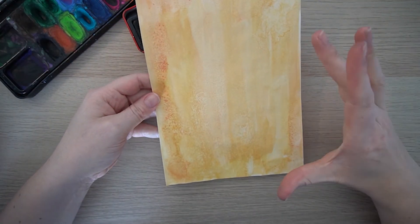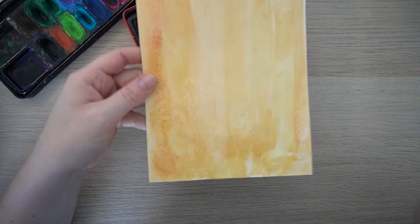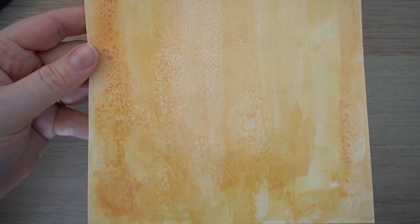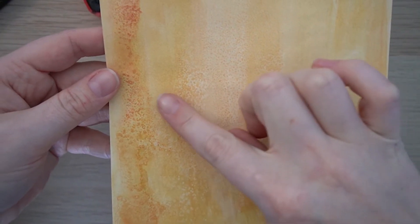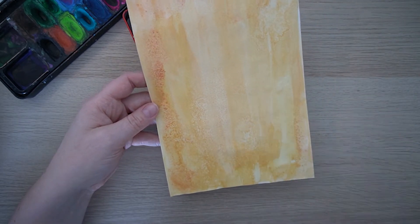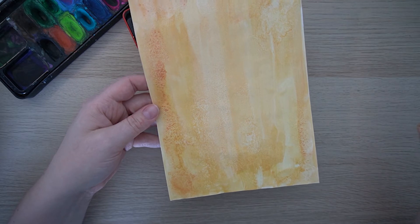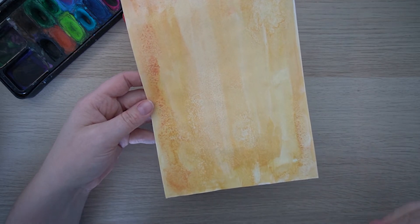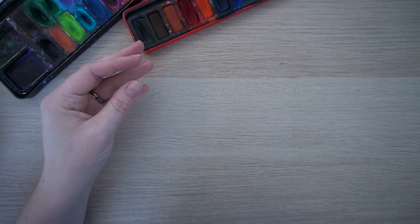So the next one is using watercolor with salt. Now if I just zoom in you will be able to see some of the texture created. Now this can be a more subtle technique depending on what salt you use with it. Now this again a wash of color. You sprinkle salt on top and you leave it to dry and then the salt sucks up the color from around it and you brush it off afterwards. So let me show you how to do it.